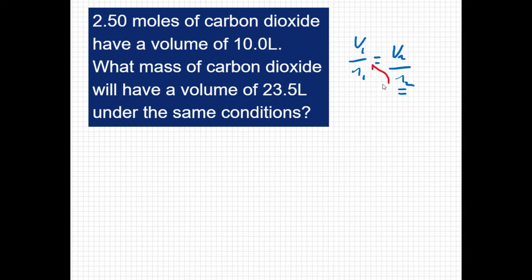To isolate that, I'm going to do a little cross multiplying. I'm going to say V1 N2 equals V2 N1. Then I can isolate the N2 by bringing my V1 down here. So, N2 is going to equal V2 N1 all over V1.